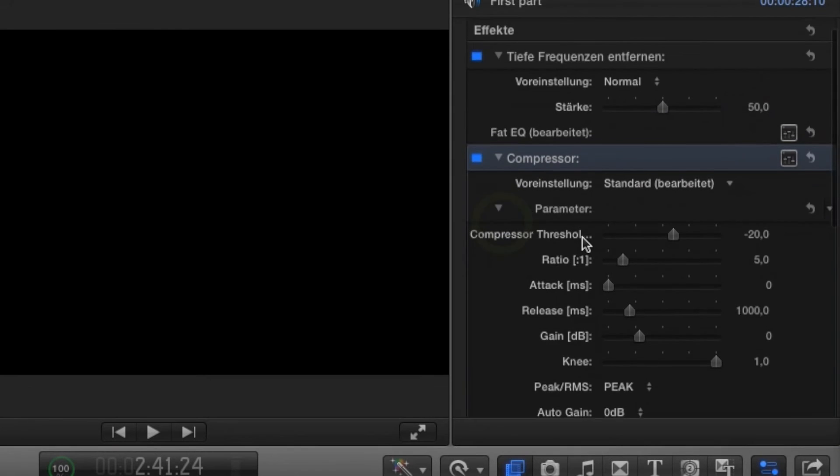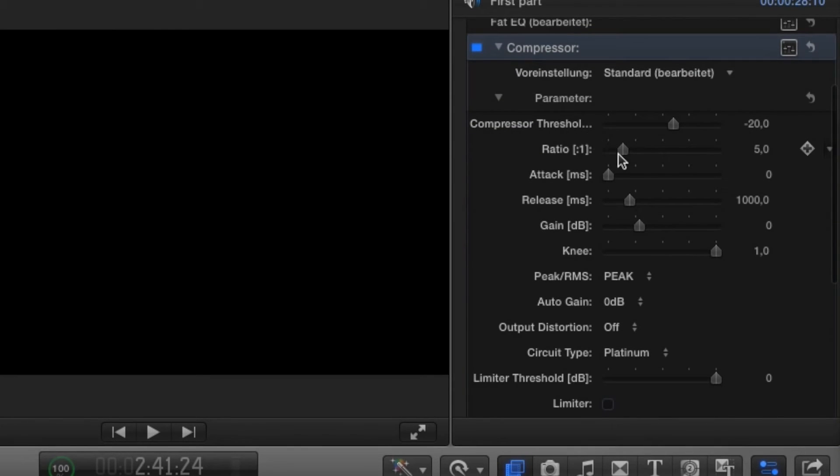The three most important parameters you can tweak with all compressor plug-ins are, first of all, the ratio, which determines the amount of compression. I usually keep it around 4 to 5 for spoken words.